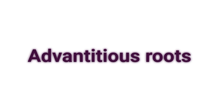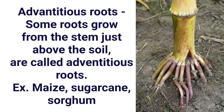Some plants' roots grow from the stem just above the soil. These are called adventitious roots. Examples are maize, sugarcane and sorghum, which have two types of roots: adventitious roots above the soil and roots growing under the soil.